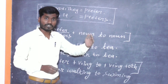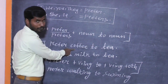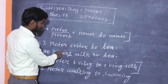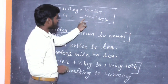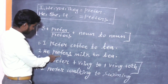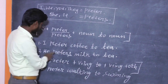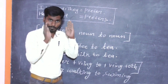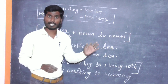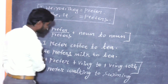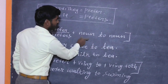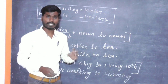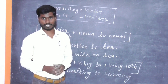I prefer coffee to tea. Understanding how to compare: with subject 'I', we use PREFER. Suppose the subject is he, she, or it — we use PREFERS. He prefers milk to tea — that means milk is preferred over tea. You can use sentences easily: I prefer apple to orange, I prefer mango to orange.